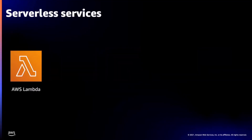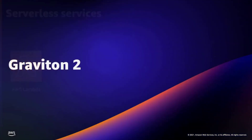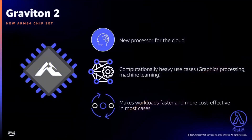Let's start with Lambda. Lambda is our serverless compute service that lets you run code without provisioning or managing servers. There are trillions of Lambda invokes per month and hundreds of thousands of AWS customers use Lambda. The first release I want to talk about is Graviton 2. Our friends at Annapurna Labs designed this new processor for the cloud. Now when you run your Lambda functions, you can use either the existing x86 chipset or the Graviton 2 chipset.